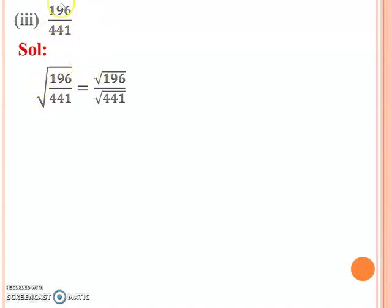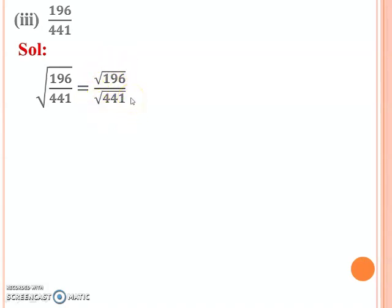We will solve the third part, which is 196 over 441. Now we will find the square root of this number. The first step is to apply the property: when you have a square root with a fraction number, you can apply the square root to both numerator and denominator separately. So you need to find the square root of 196 and the square root of 441 using the prime factorization method.